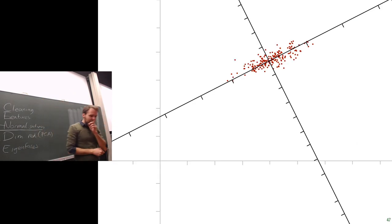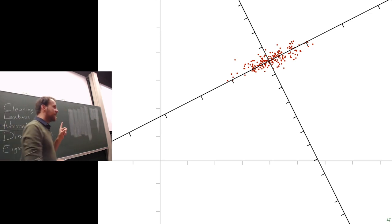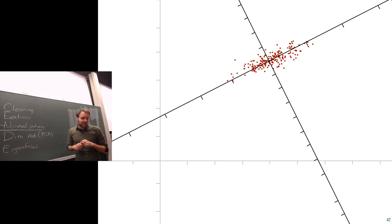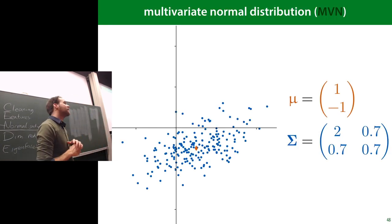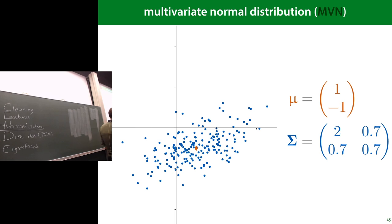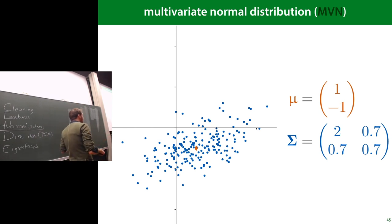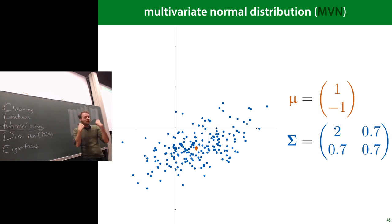The multivariate normal distribution is a generalization of the standard normal to multiple dimensions. Its mean is a vector — a point in space. What is variance in 1D becomes a covariance matrix: the diagonal entries give the variance in each dimension, and off-diagonal entries are the covariances — how much dimensions are correlated. Larger off-diagonal elements correspond to a more elongated, diagonal distribution.